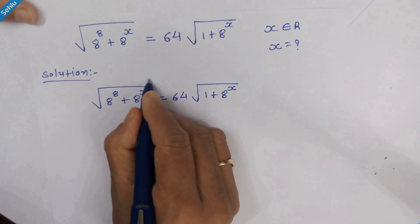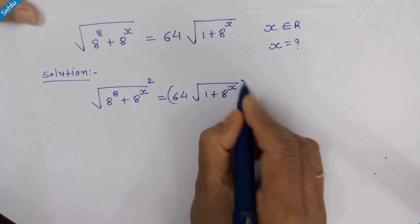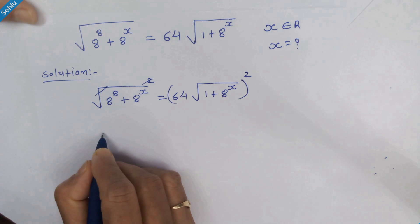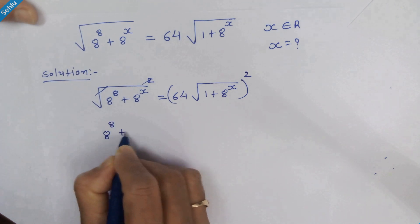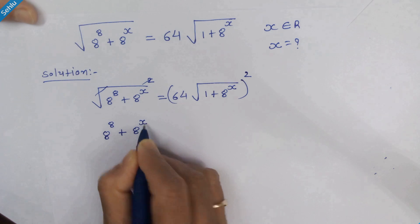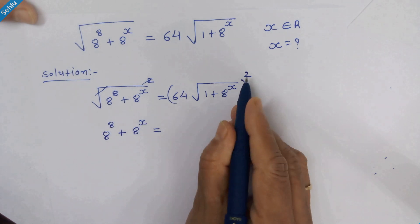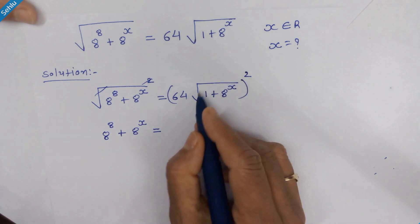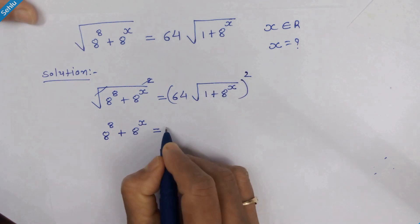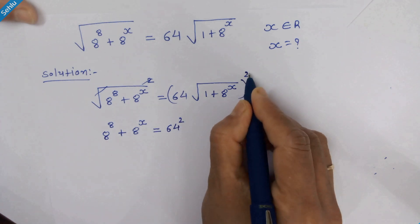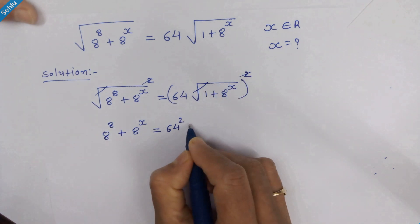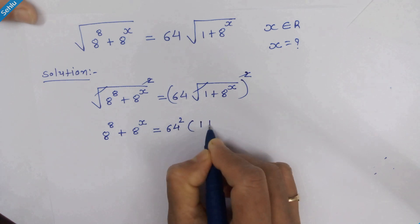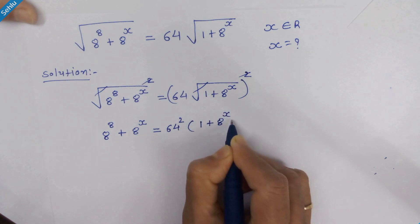First we will square both sides, so the square and square root get cancelled out. We have 8 raised to 8 plus 8 raised to x is equal to 64 squared — the square belongs to 64 and also to the square root, so the square and square root cancel — giving us 64 squared times 1 plus 8 raised to x.